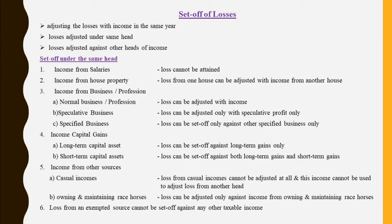The next head of income is capital gains. There are two types of gains: long term capital gain and short term capital gain. Under a long term capital gain, if you have a loss, then that loss can be adjusted only from long term capital gains. On the other hand, if you have a loss in a short term capital asset, that can be adjusted both with long term gain or with short term gain.